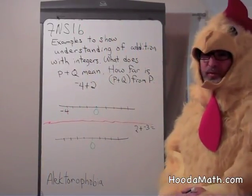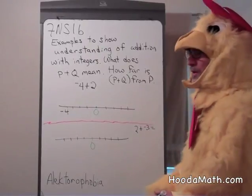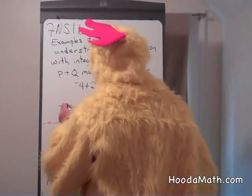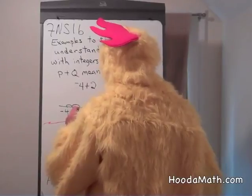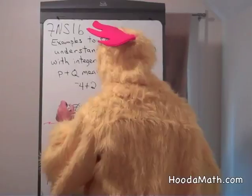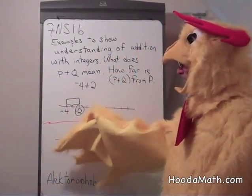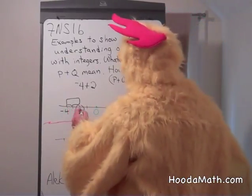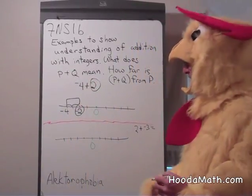When we add 2, we're adding a positive number, so we're going in the direction to the right of negative 4. And that number, or that sum, is negative 2. How far is the distance between negative 4 and negative 2? Well, that's easy to see. It's 2 units, or what we added to negative 4.